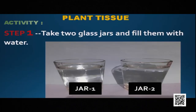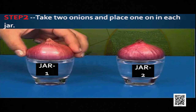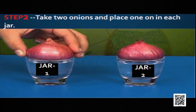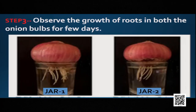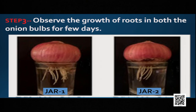Step one: take two glass jars and fill them with water. Label them jar one and jar two. Step two: take two onions and place one on each jar, as shown in the picture. Step three: once the onion bulbs are placed in the jar, roots will come out after a few days. Observe the roots of the onion in both jars for a few days.